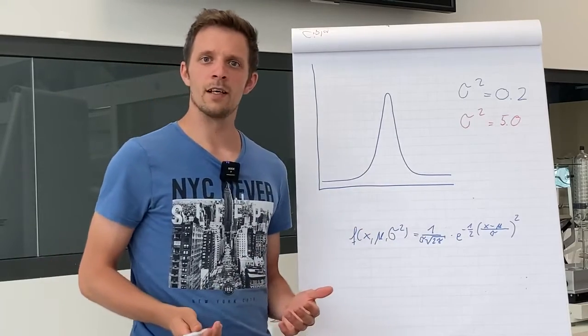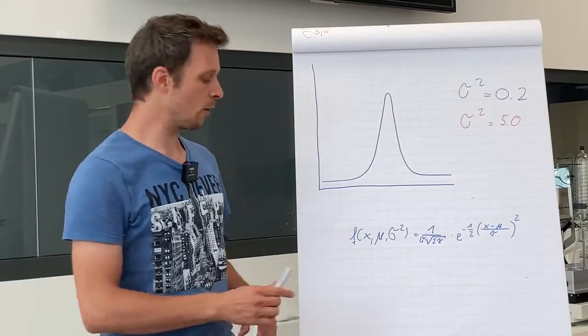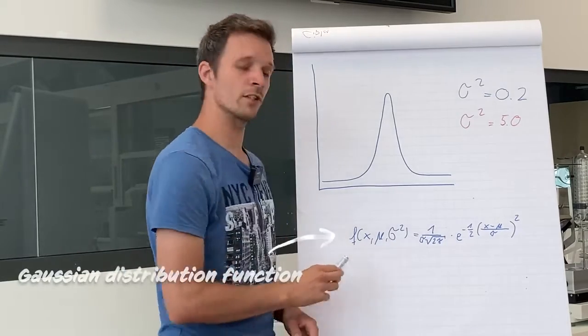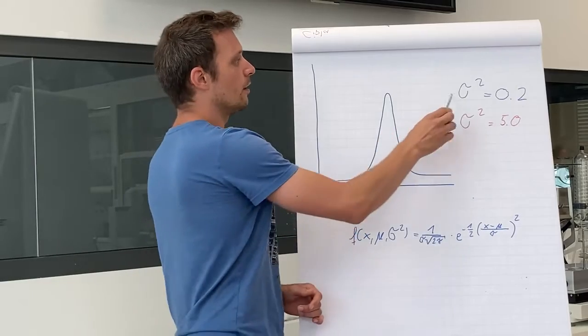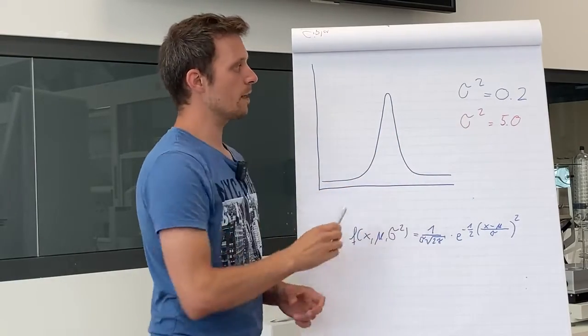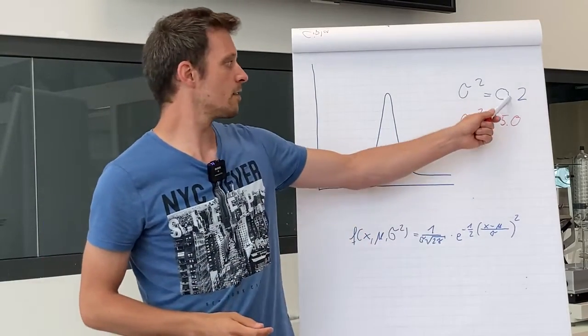In theory, ideal peak shapes can be described with the following equation, the Gaussian distribution function, with some changes in the variance. This ideal peak shape has a variance of 0.2.